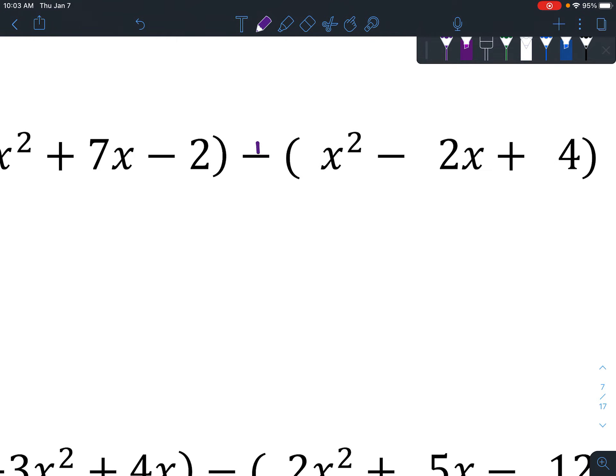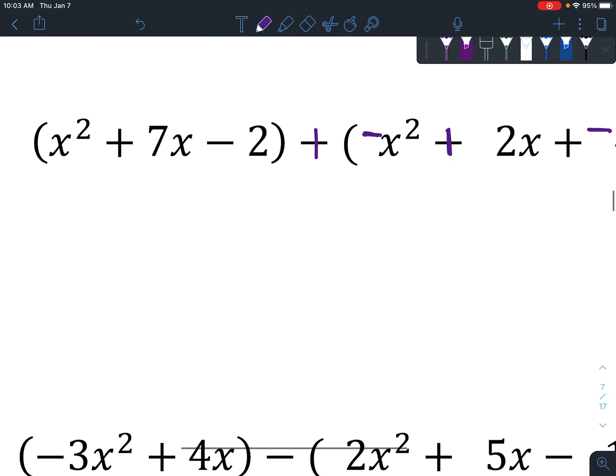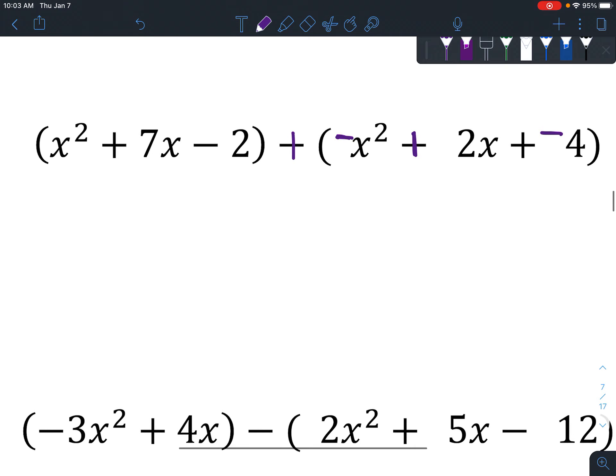Remember, right off. As soon as you see that subtraction, change it to add the opposite, opposite, opposite. And now we're going to line up our like terms. Negative x squared plus 2x. Well, plus negative 4 is really the same as minus 4. We can write it like that. It's a little more concise.